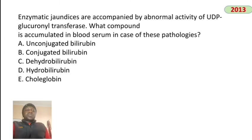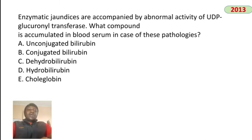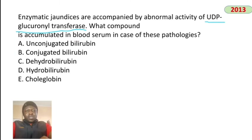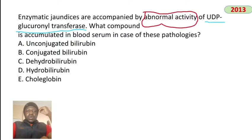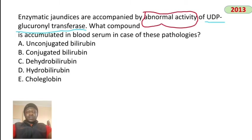Enzymatic jaundice is accompanied by abnormal activity of UDP-glucuronosyltransferase, which is used for conjugation of bilirubin. If this enzyme is deficient, conjugation cannot occur, so unconjugated bilirubin accumulates in blood serum. The answer is unconjugated bilirubin.